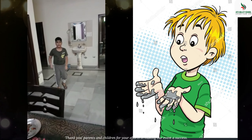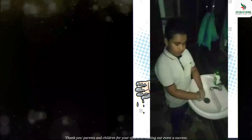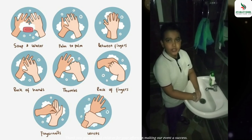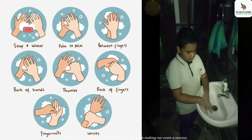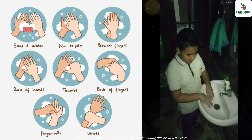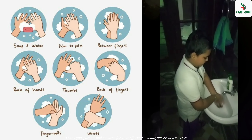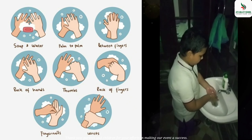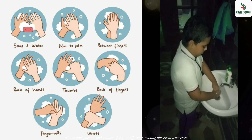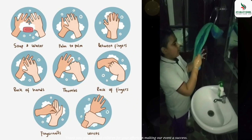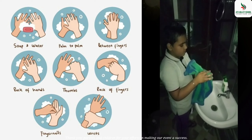Food is looking very tasty. Is this the right way to wash hands? Now let me tell you how to wash hands: use palm to palm, use the back of your fingers, clean the tips of your fingers, then rinse properly with running water, and wipe your hands properly with a clean towel.